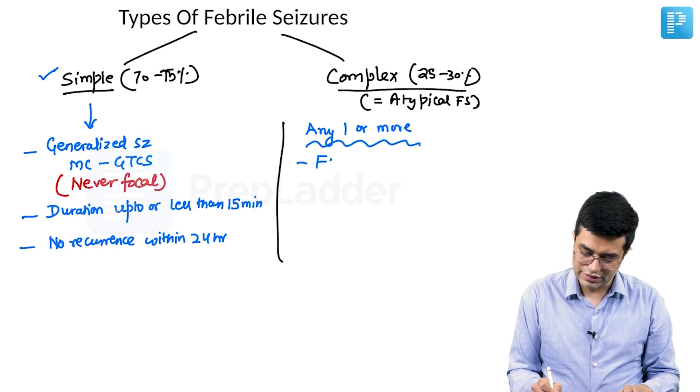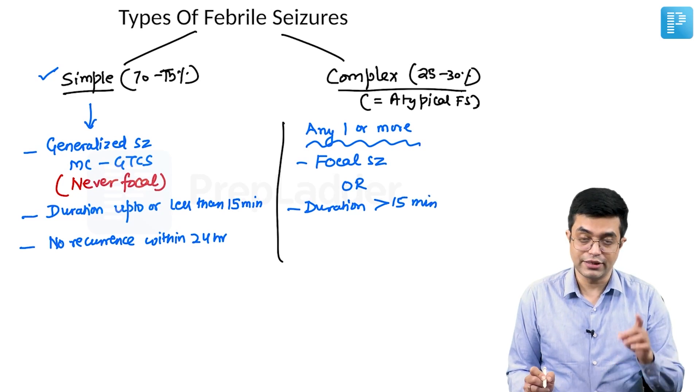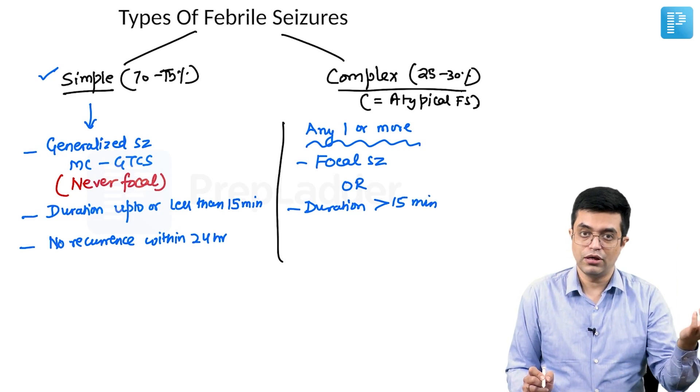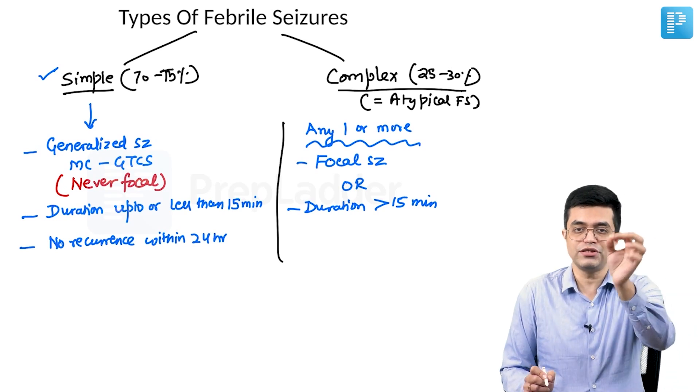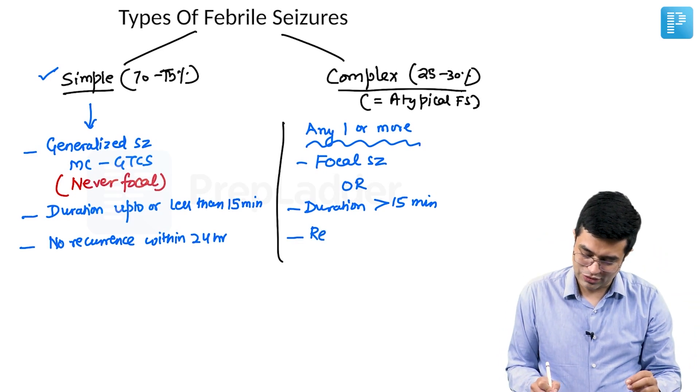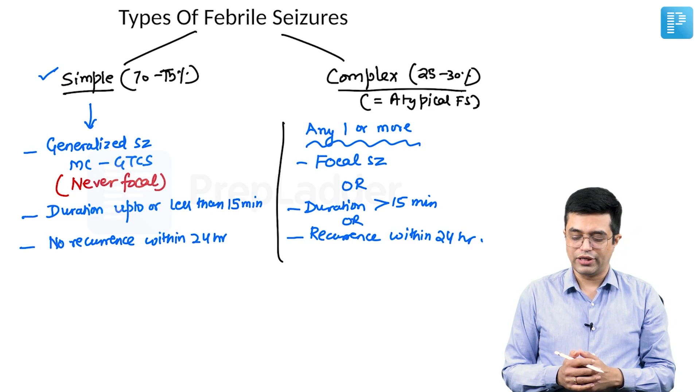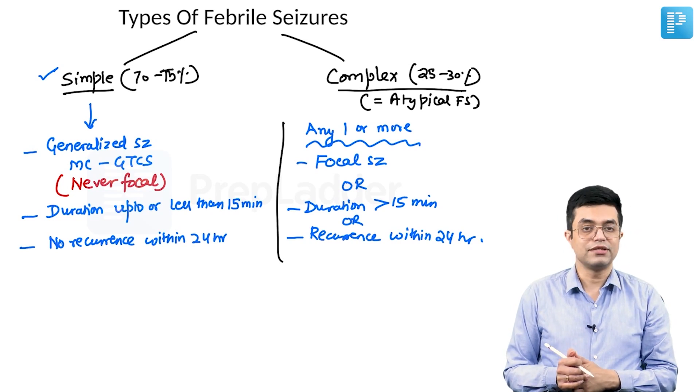If they are focal seizures, or if the duration of the seizure is more than 15 minutes. Please remember that up to 15 minutes, including 15 minutes, will be simple. More than 15 minutes, 15.01 minutes will be your complex febrile seizure. And recurrence, or if there is recurrence within 24 hours, they will be called as complex or atypical febrile seizures.